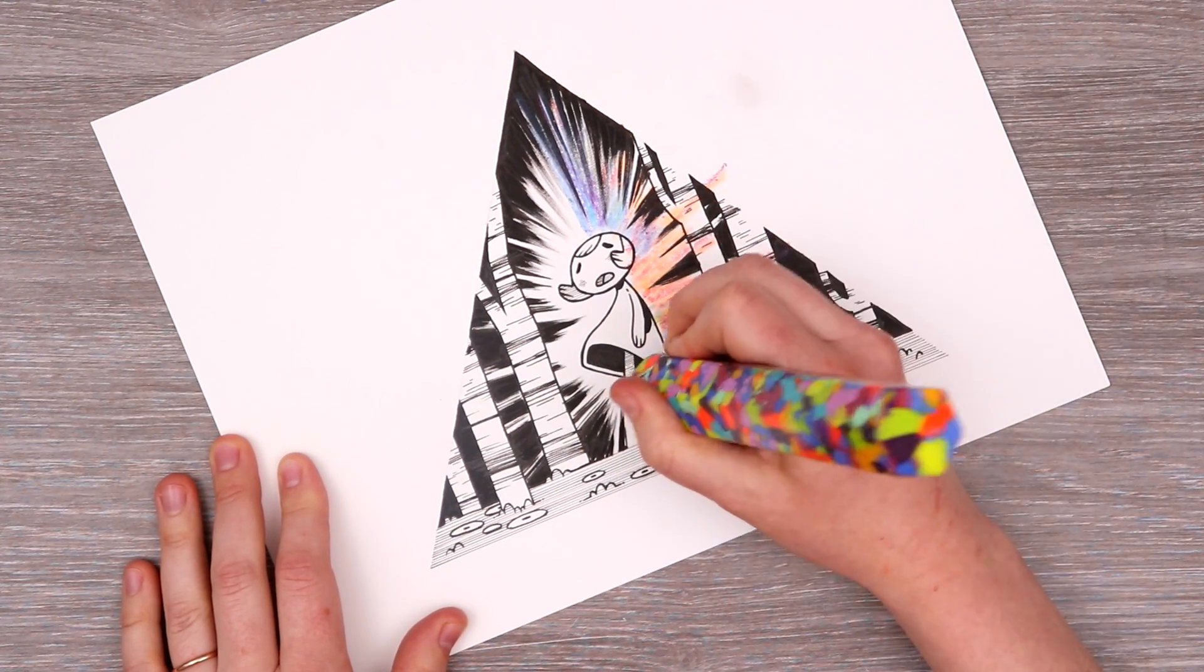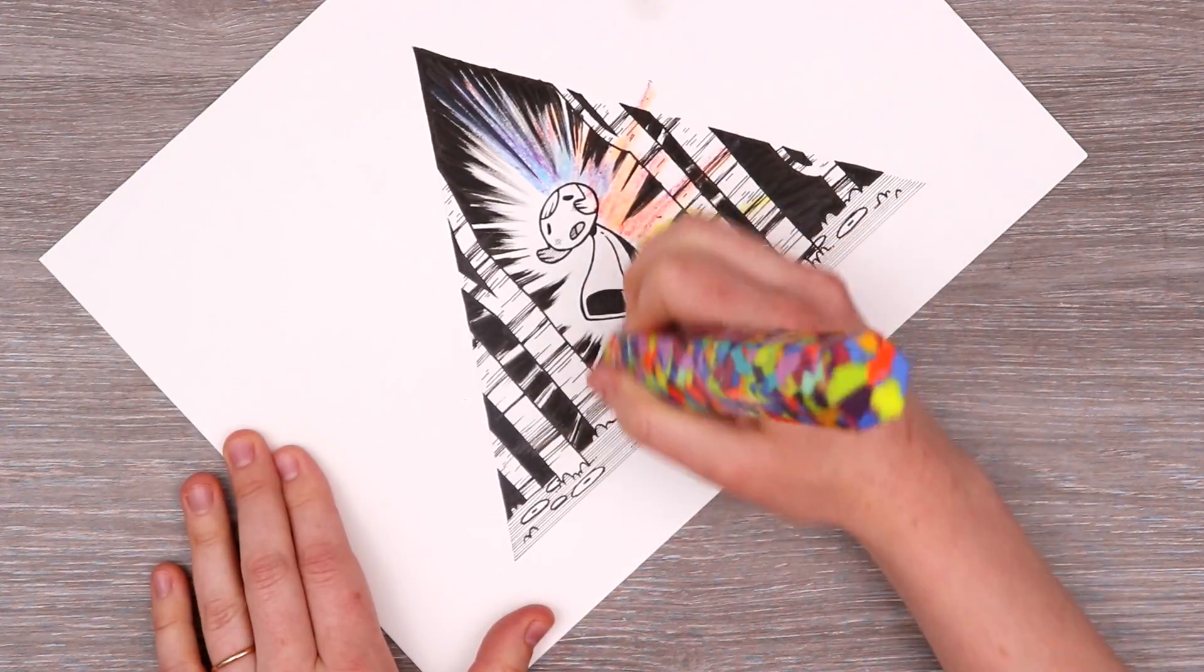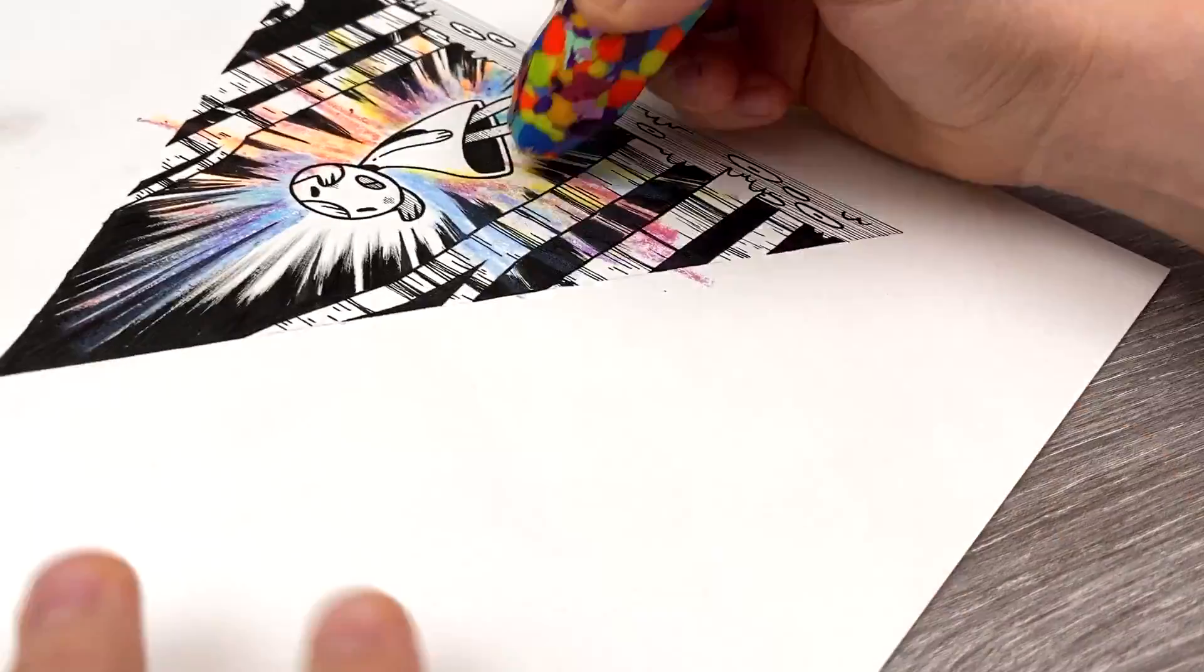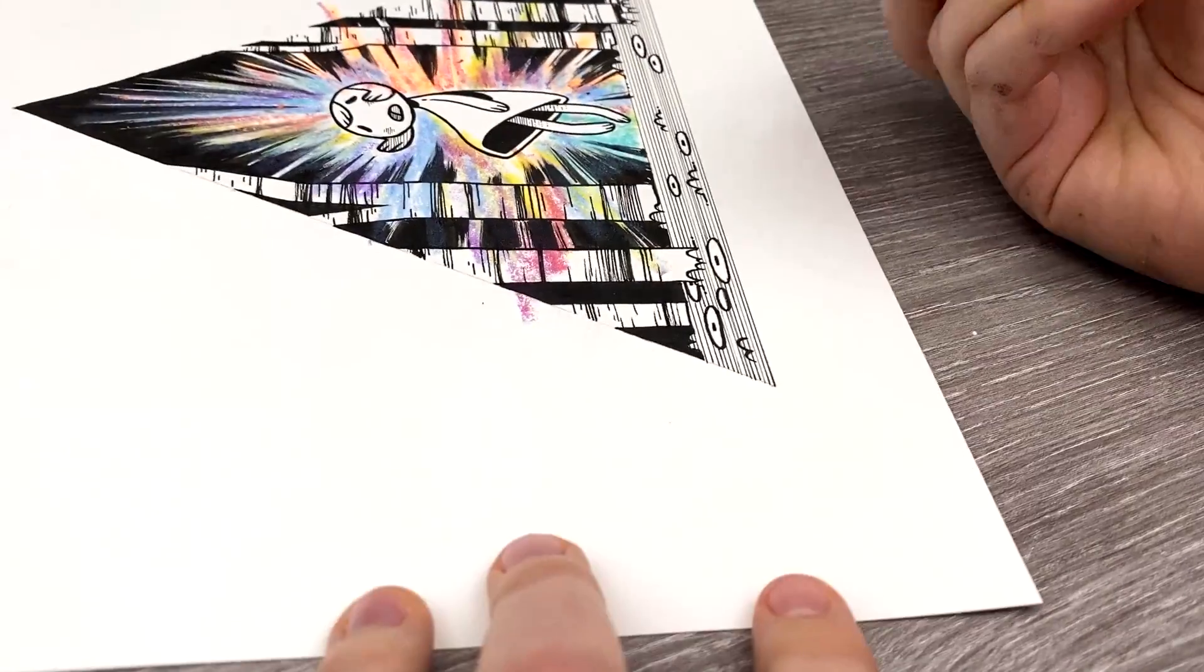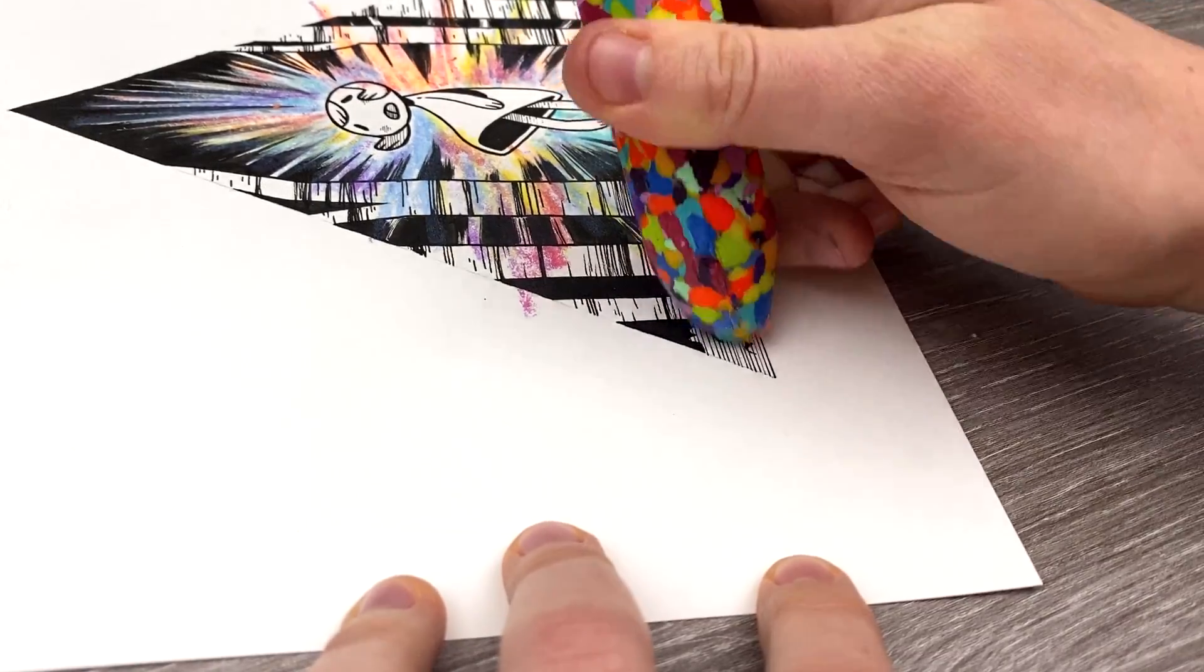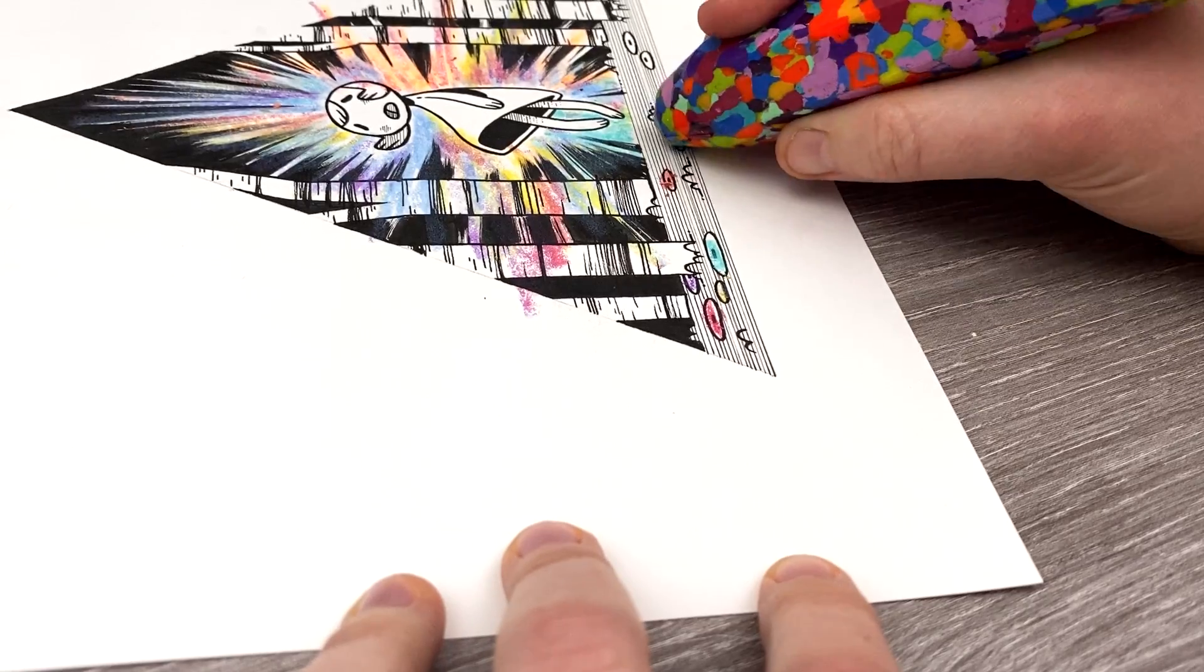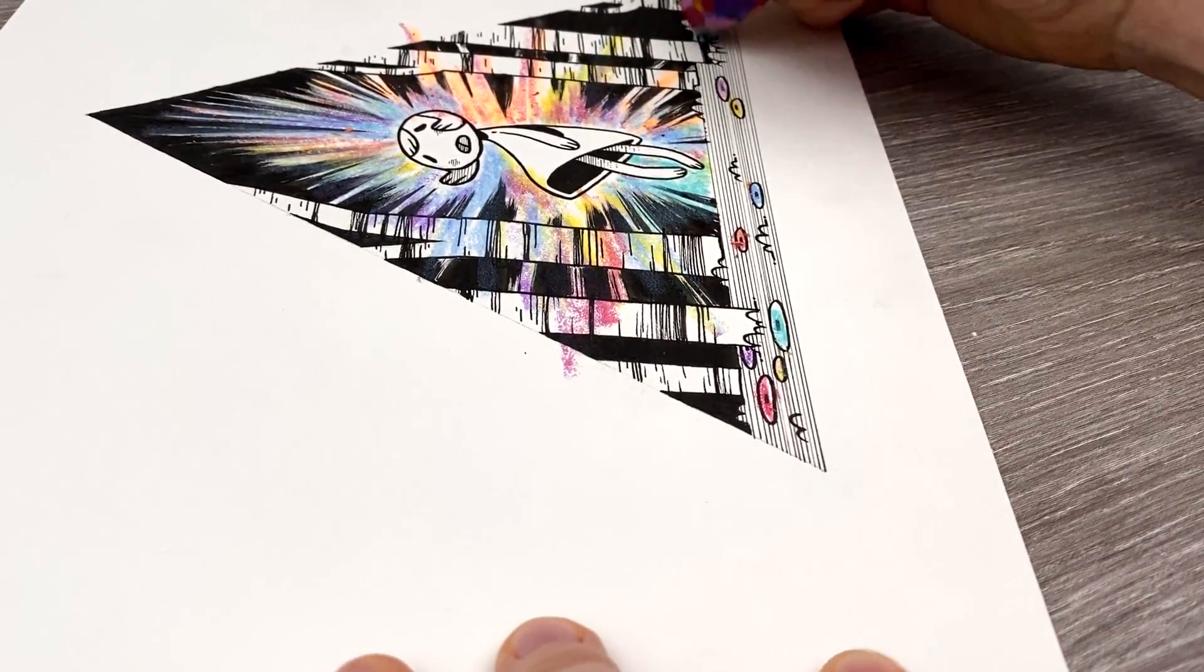So after our pen work was complete, it was time to add our colorful crayon explosion, which didn't really turn out as fun as the sketch. I think the sketch was just a lot more loose and free and fun, and there's just a little bit too much restriction, I think, on this illustration. That being said, I still think it turned out really fun. And that is all three of our 15 color crayon illustrations.